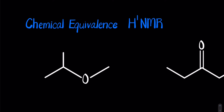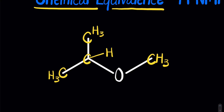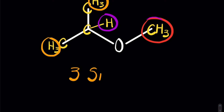Before we get into actually looking at a spectra, let's go through a simple exercise with chemical equivalence, which is huge in understanding NMR spectra. Chemical equivalence is pretty much symmetry in a molecule in the most basic sense. Looking at this first example, because there is no symmetry in this molecule, the hydrogens on this carbon are experiencing a different environment than the others. These hydrogens are chemically equivalent to each other but different from the rest. Therefore, this spectrum will have three signals for H1 NMR.